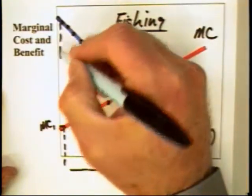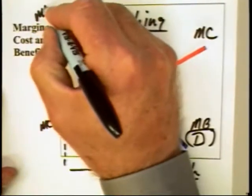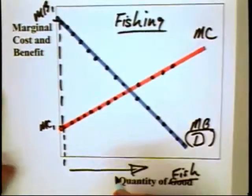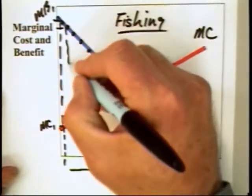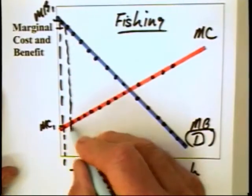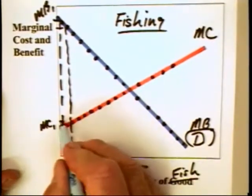Now, the marginal value of this first fish that is caught is way up here, MB1. The marginal value of the next fish may be lower.